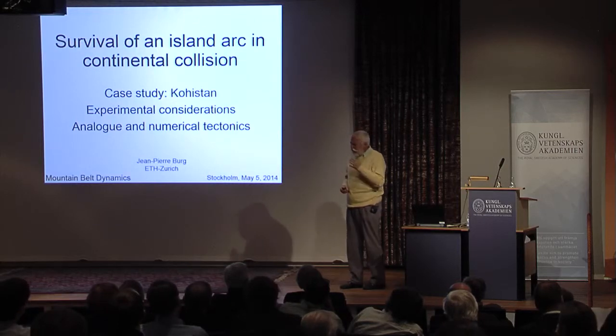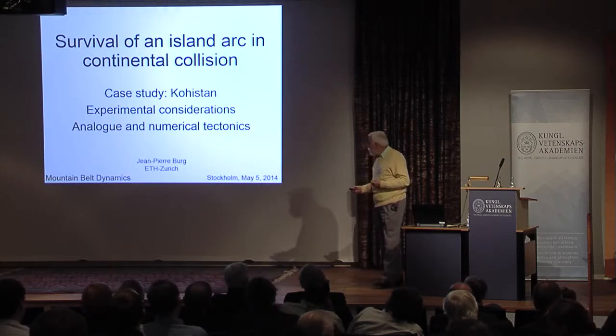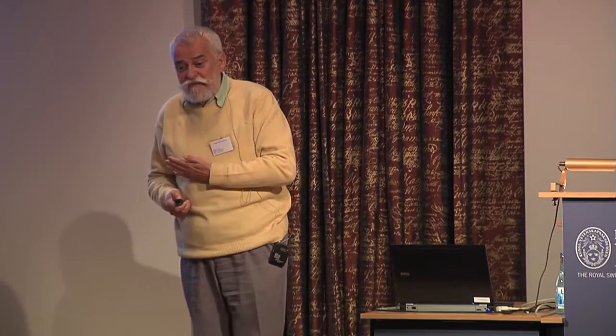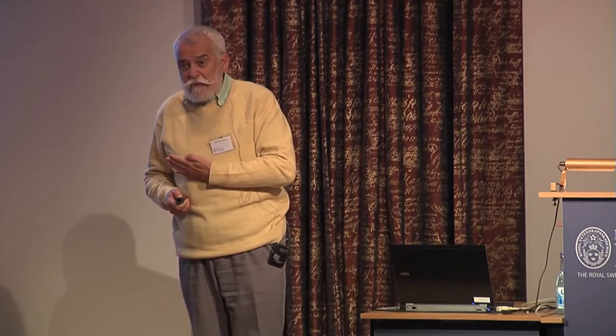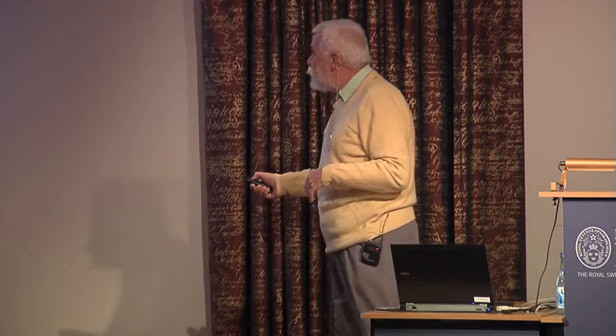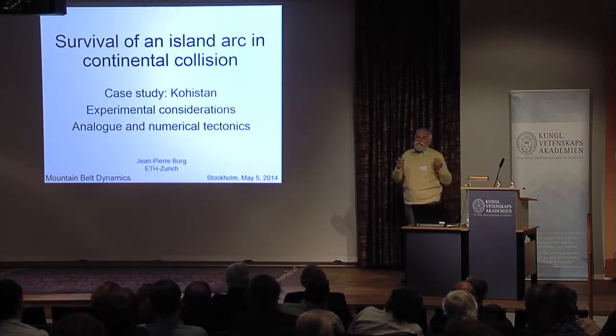That was not quite new, because people who had worked in Kohistan, which is the western part, know that there are two sutures in the west Himalayas, and only one so-called Tsangpo suture in Tibet. How do we go from two to one? We go from two to one because of the Kohistan, and I will first take you through a long journey, purely geological, so that the others can sleep.